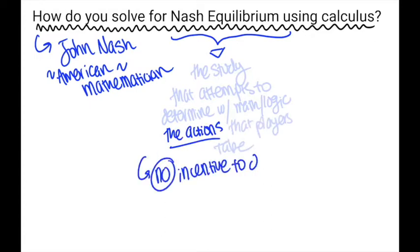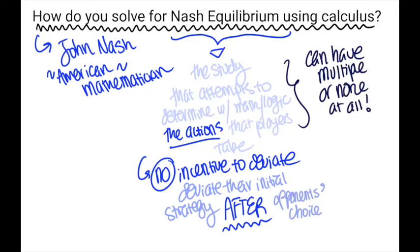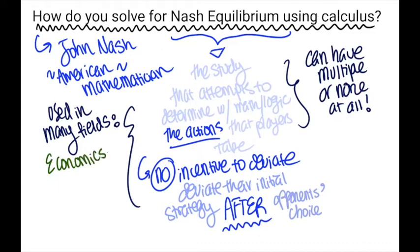Nash Equilibrium occurs when the optimal outcome of a game for a player is where there is no incentive to deviate from their initial strategy after considering an opponent's choice. It is possible for a game to have multiple Nash Equilibria or none at all. The importance of Nash Equilibrium is far-reaching with applicability in economics to social sciences.